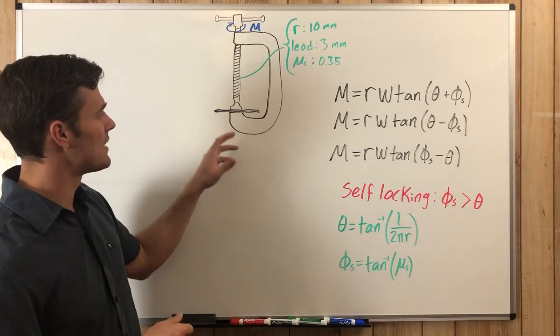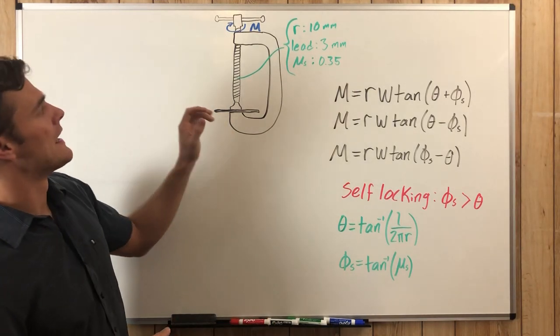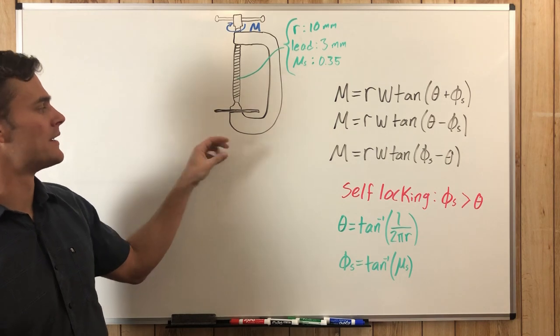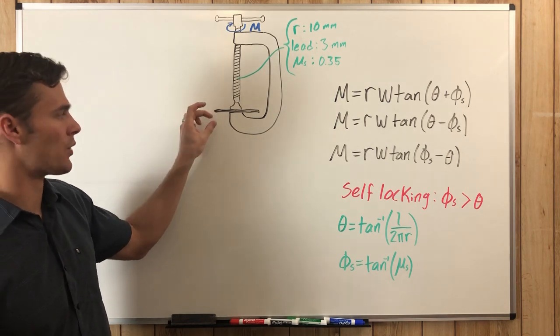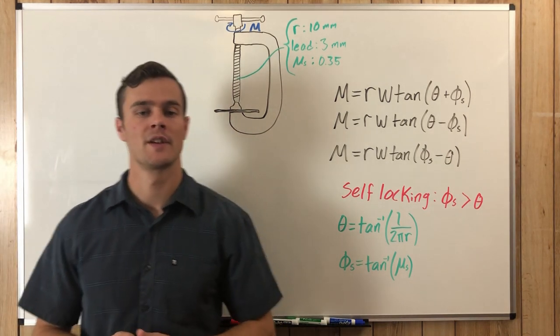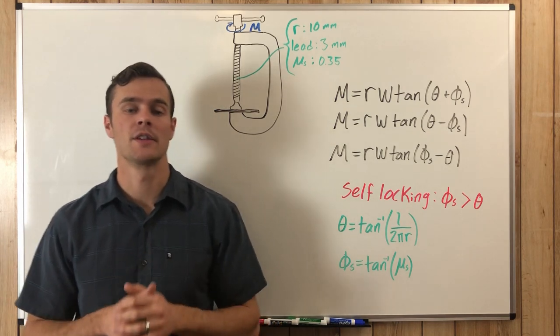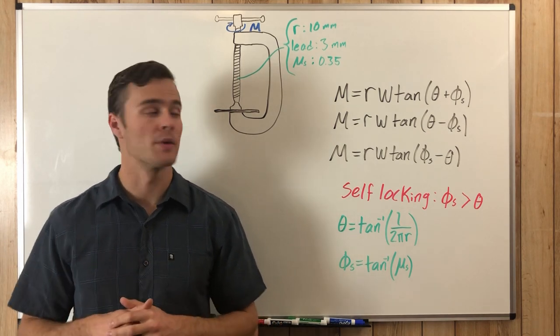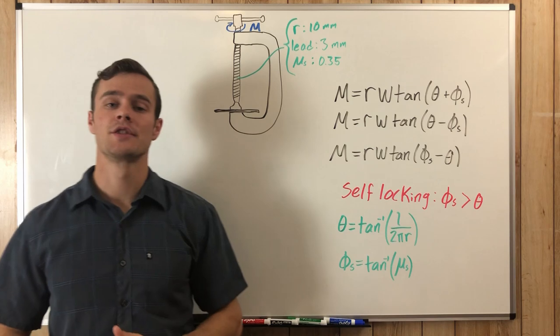So what we have here is a C-clamp clamping down on this board, and we need to figure out the torque M needed to compress this board with 50 newtons of force. That's what we're going to figure out in this video. If you want a video explaining all these equations, you can click on this video link and that will take you to another one of my videos.